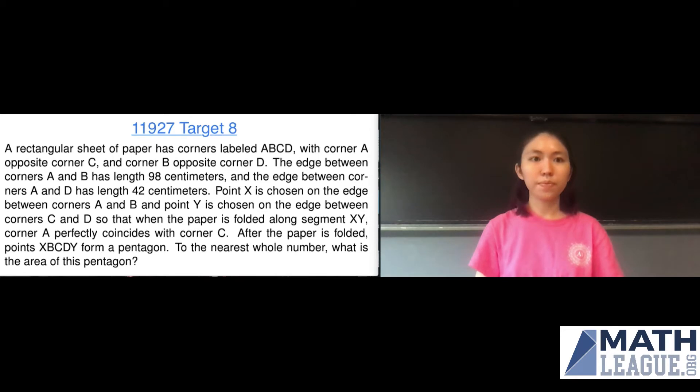Now the problem states as follows: A rectangular sheet of paper has corners labeled ABCD with corner A opposite corner C and corner B opposite corner D. The edge between corners A and B has length 98 centimeters and the edge between corners A and D has length 42 centimeters.